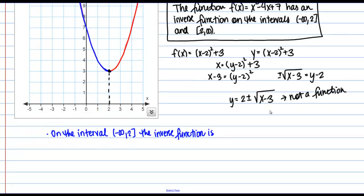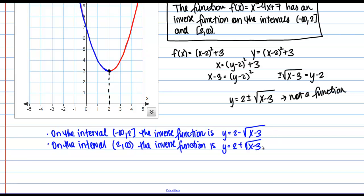On the interval from negative infinity to 2 — the left-hand side of the parabola — the inverse function is the negative branch: y = 2 − √(x − 3). On the interval from 2 to positive infinity, we choose the positive branch: y = 2 + √(x − 3). We'll verify this on a graph in a moment.